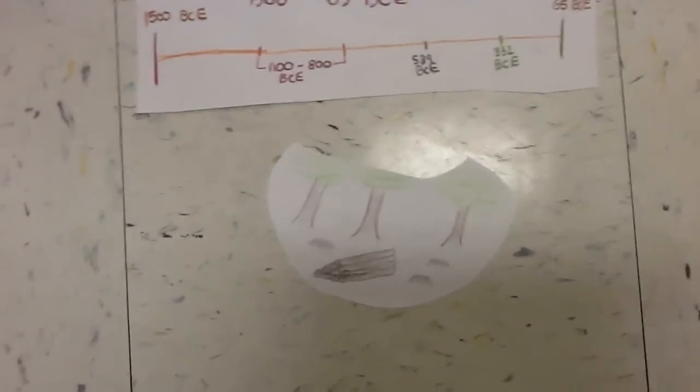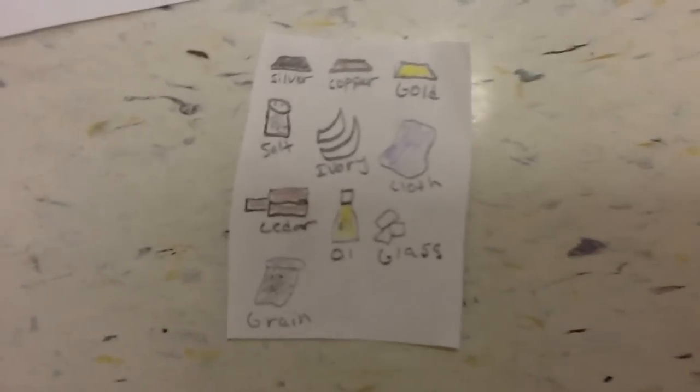They traded for important resources like silver, copper, gold, salt, ivory, cloth, cedar, oil, glass, dye, and grain.